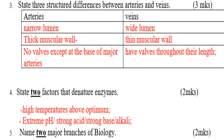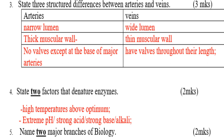Question number three: state the structural differences between arteries and veins. Arteries have narrow lumen; veins have wide lumen. Arteries have thick muscular walls; veins have thin muscular walls. Arteries have no valves except at the base of major arteries; veins have valves throughout their length.